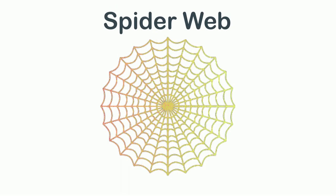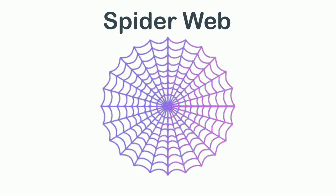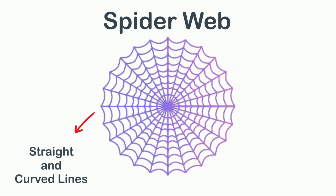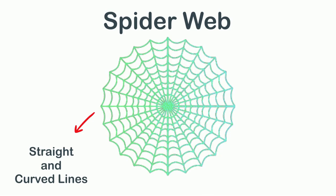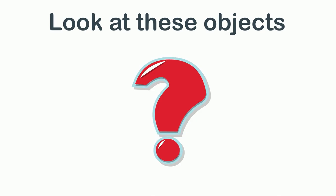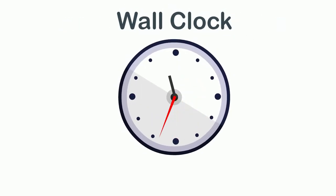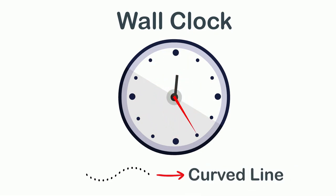There are so many examples of these lines around us. Look at this spider web — it is made up of so many straight and curved lines. Let's identify which type of lines are used in making the shapes of objects around us. This wall clock is round, so it is made from a curved line. What other object makes a curved line? This snake — it is moving in a curved line.